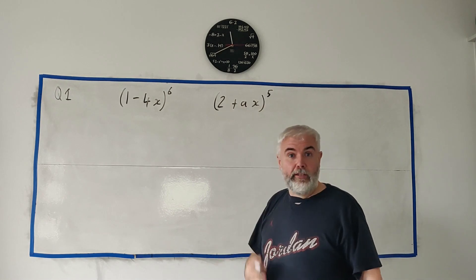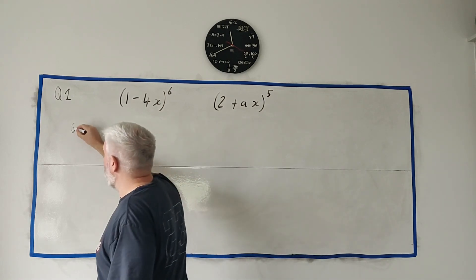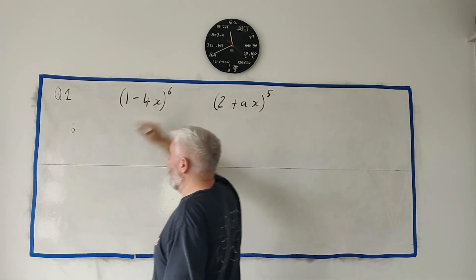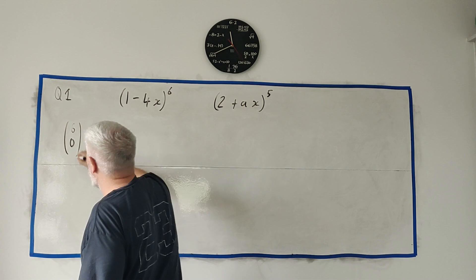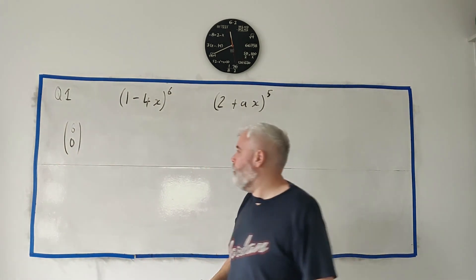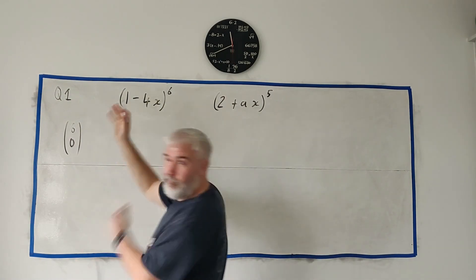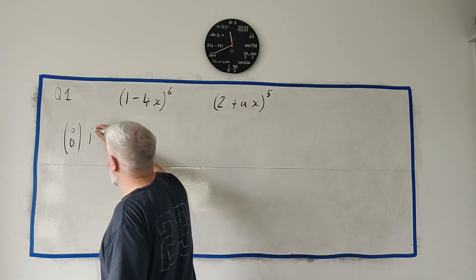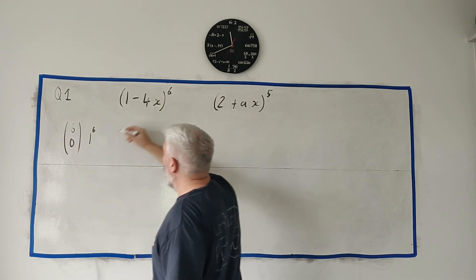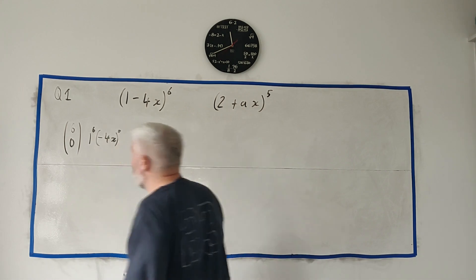So we have a formula to find out every part of this starting at the beginning with it'd be something like 6, that's from this 6 here, 6 choose 0. And that'd be the first term or often we'd say the zeroth term and that's one of the powers, we'll go with this one here you can pick either one you want, and we'll say 1 to the power of 6 and multiplied by -4x to the power of 0.